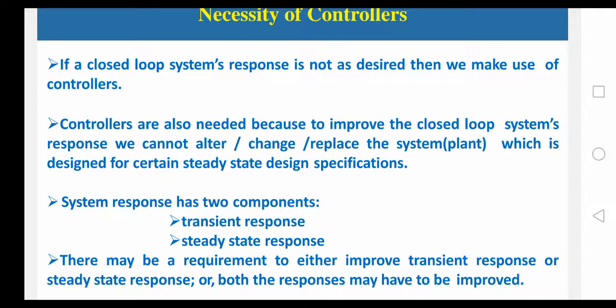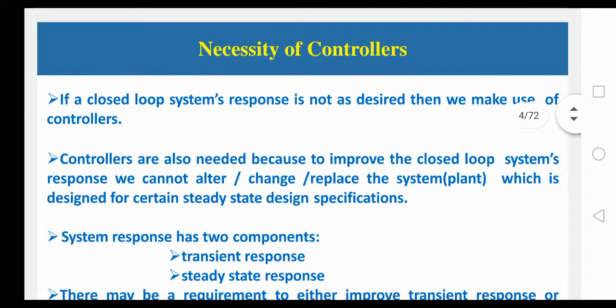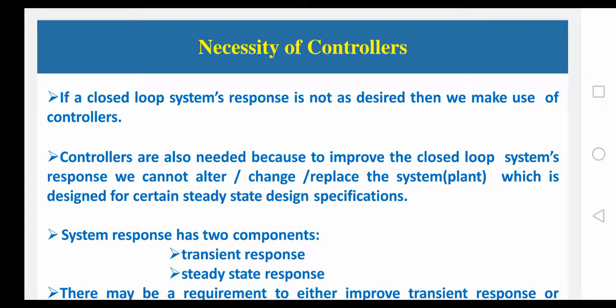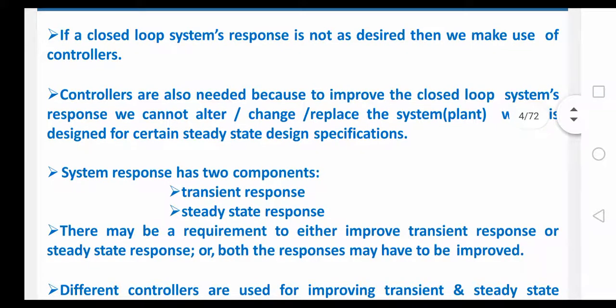If you are using feedback and if you are not getting the desired output, then we are going to use different controllers — either P controller, PI controller, or PID controller, whatever it may be. Or in some cases, you can use compensators also. Controllers are also needed to improve the closed loop system response. To improve the system stability, we cannot alter or change the process plant, but we can change the controllers — we can design which type of controller will give more system stability and which reduces the transient response.